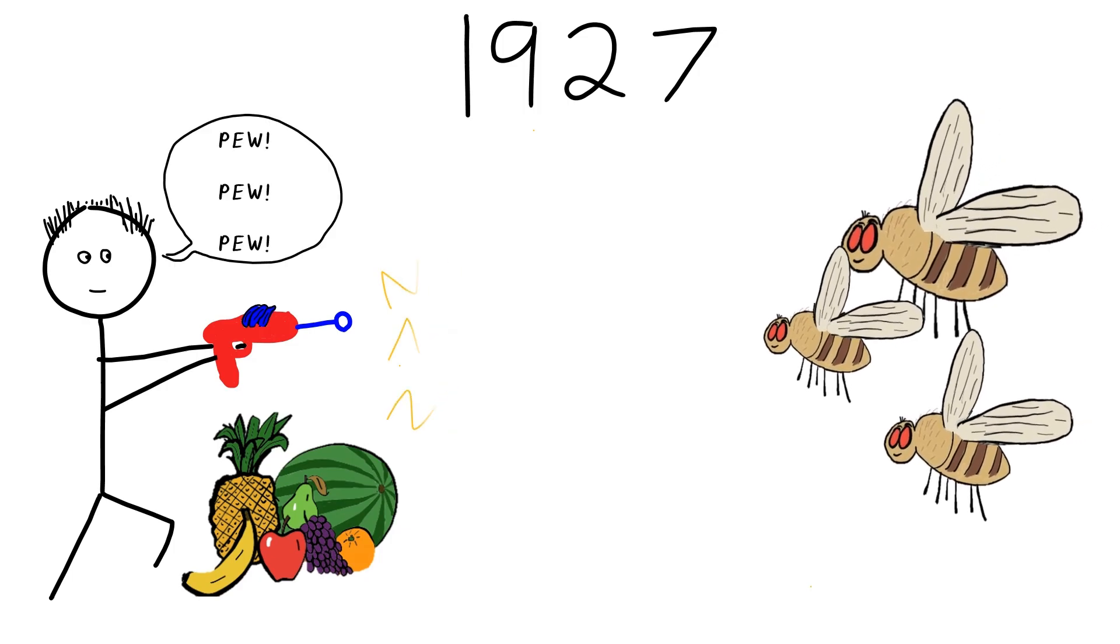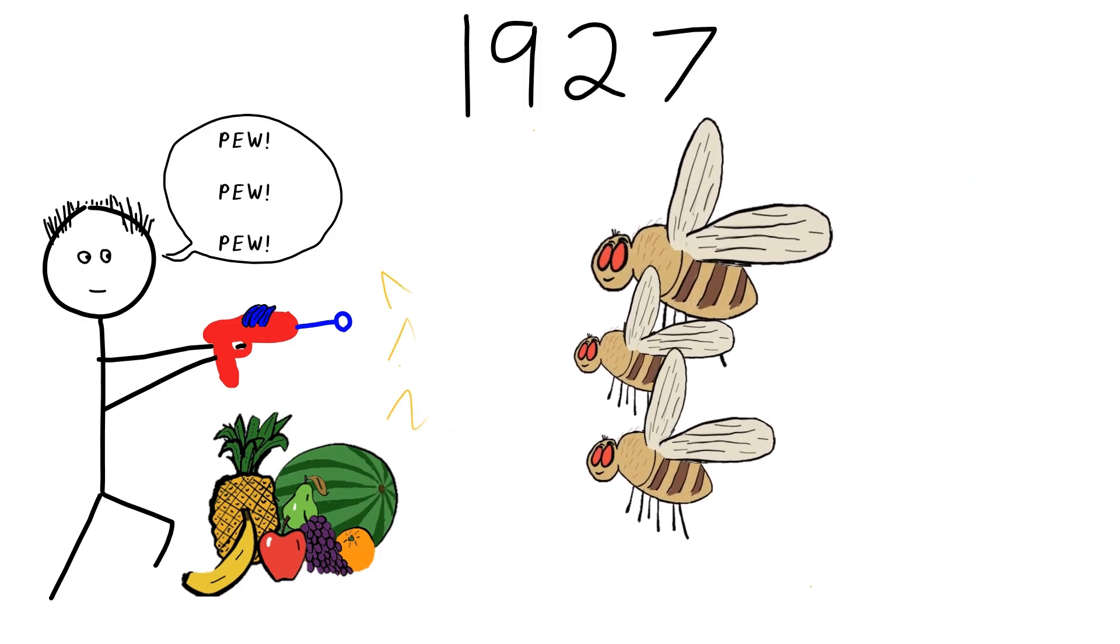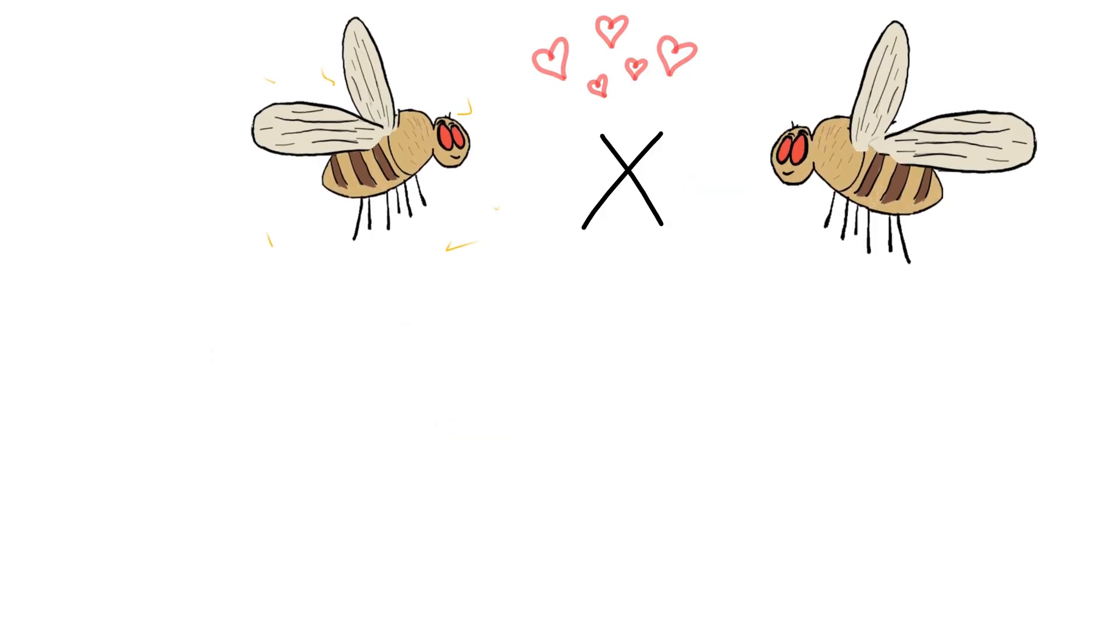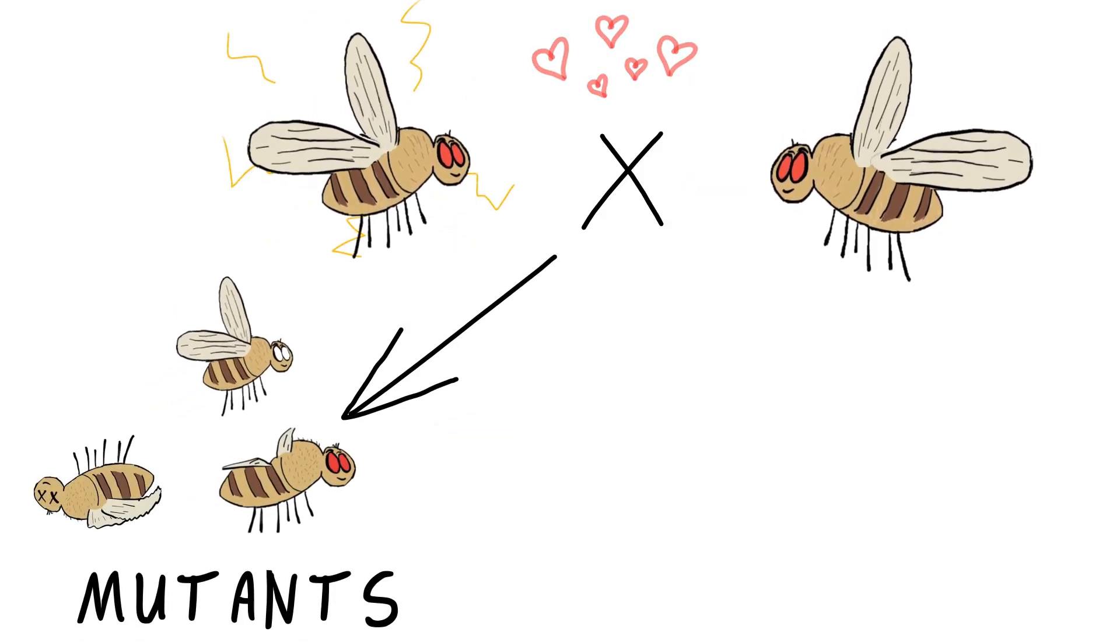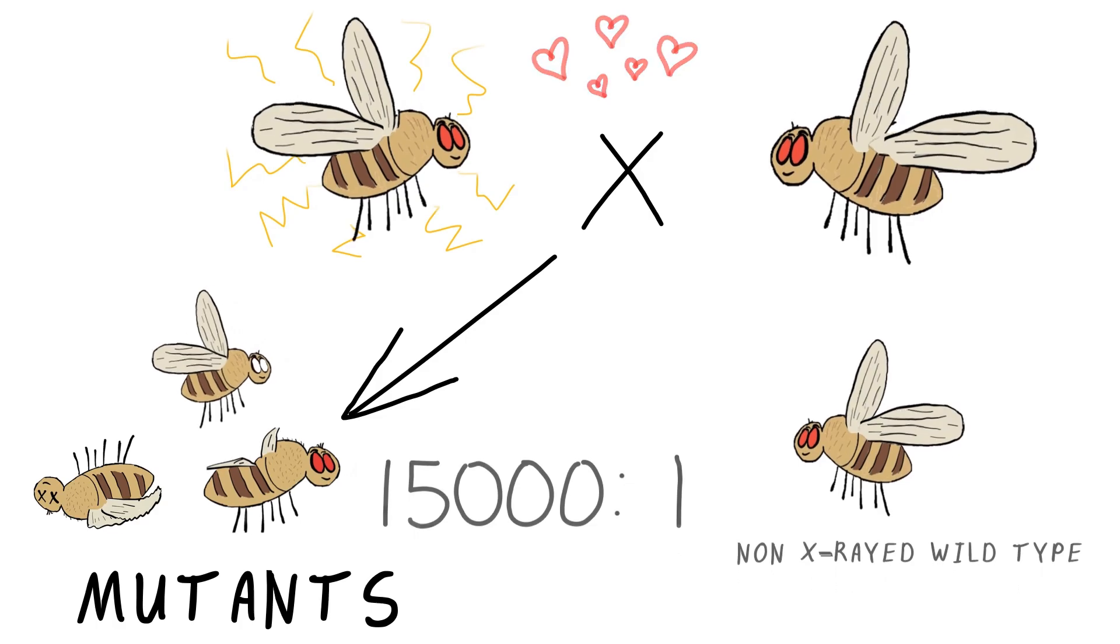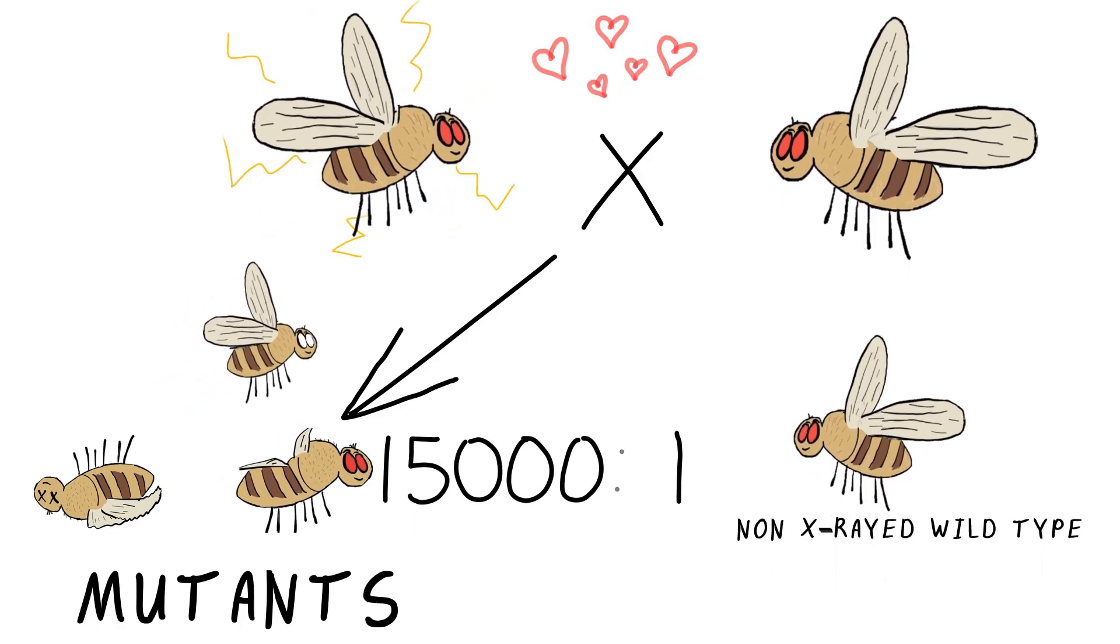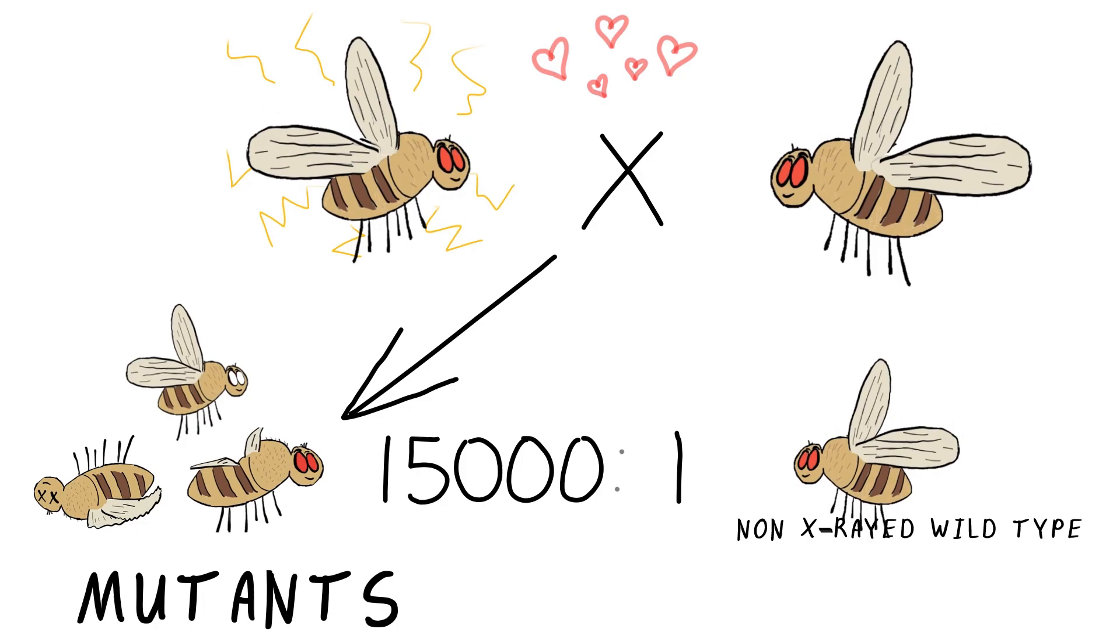Muller conducted experiments where he x-rayed sperm and eggs of Drosophila melanogaster, the fruit fly, and determined that all offspring had mutations in their genes. In fact, they had 15,000 times the mutation rate compared to that of the untreated germ cells.